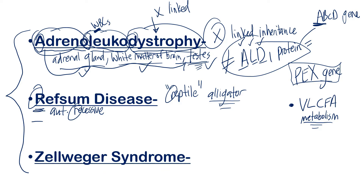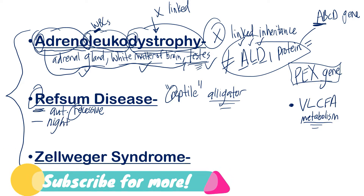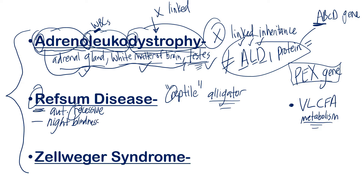How does Refsum disease present? Think of an alligator. If you look at an alligator at nighttime, you'll notice their eyes kind of glow red — they can see well at night. For a patient with this disease, what you need to remember is night blindness. The alligator's eyes glowing reddish when light is shined toward them at nighttime helps cue you into there being something going on with sight: night blindness.